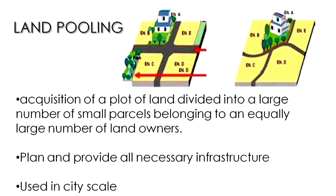Land Pooling consists of the acquisition of a plot of land divided into a large number of small parcels belonging to an equally large number of landowners, and it plans and provides all necessary infrastructure such as roads, water supply, drainage, electricity, and telephone back to the owners. It is used at the city scale, operating predominantly with large tracts of land.